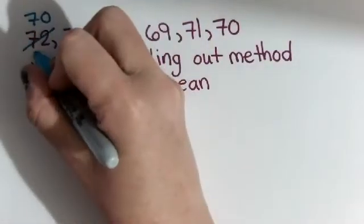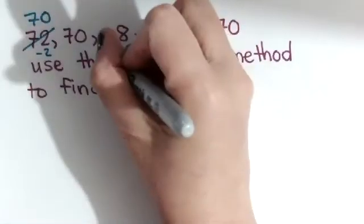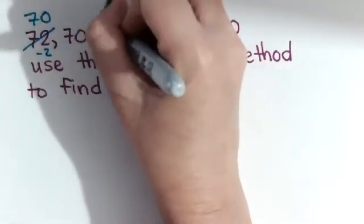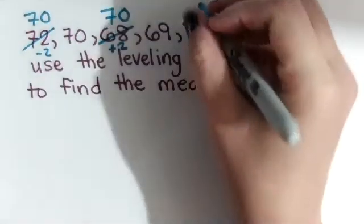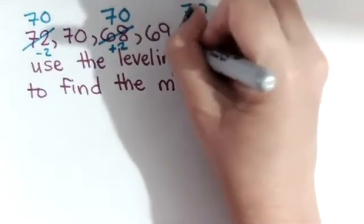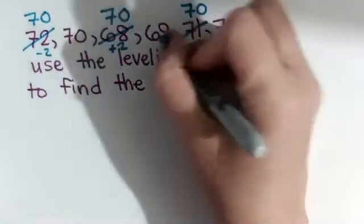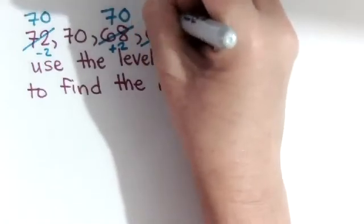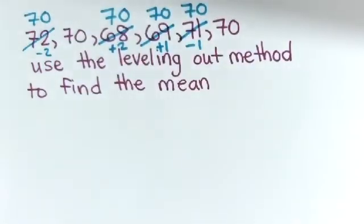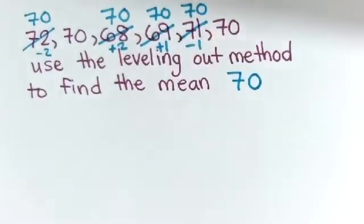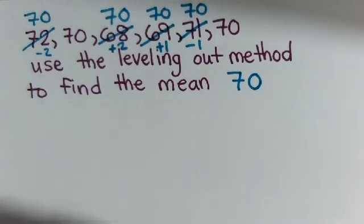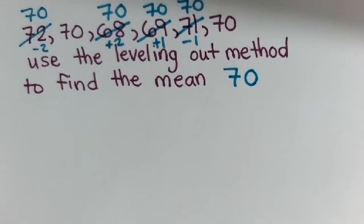Say we'll take two from this one and we'll add it to this one. And we can take one from this one and add it to this one. And you can easily see that the mean is 70 when we just scrape a level right across and push the high peaks into the low valleys.